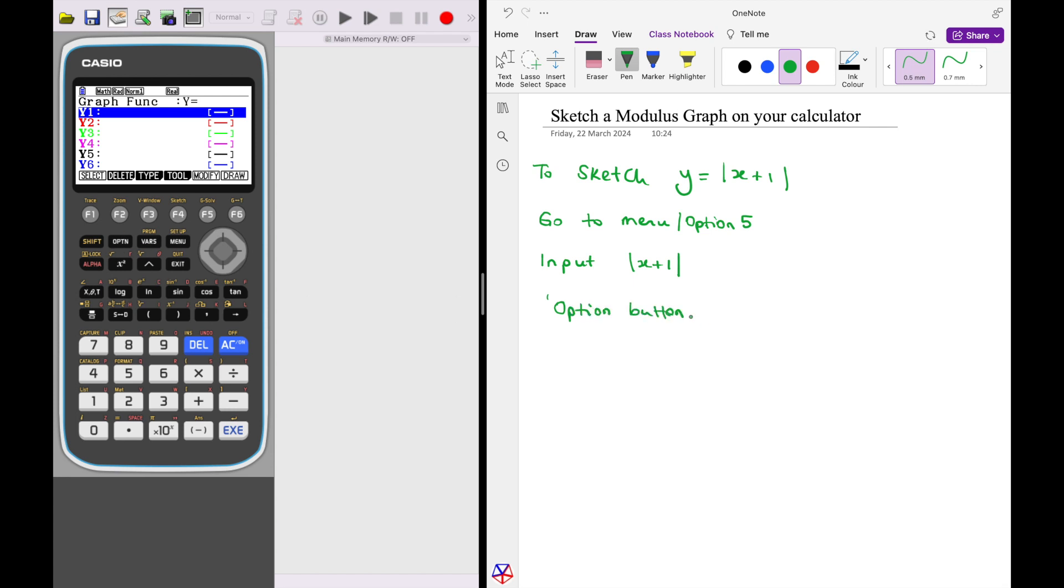Just showing it to you there and then go to F5 for numeric and then the absolute button F1. Absolute stands for absolute or modulus.